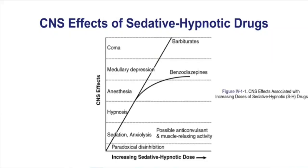We begin this chapter by reviewing this figure. The figure is going to compare two very important CNS drugs: barbiturates and benzodiazepines. It's going to look at a dose-response curve, showing you the increasing doses of those drugs and their CNS-depressant effects.